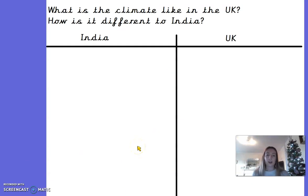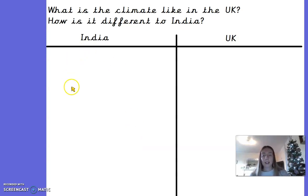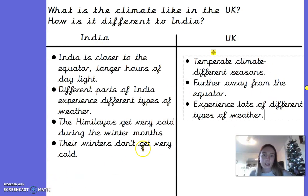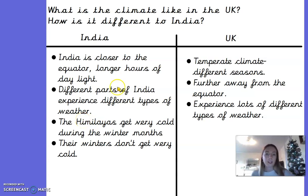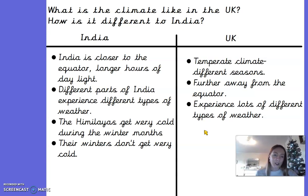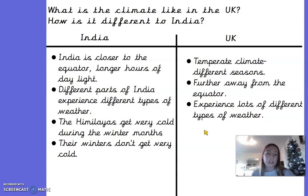Pause the video and write down as many differences as you can think of — what is the climate like in India and in the UK? India is closer to the equator so they have longer hours of daylight, whereas in the UK we're further away and have different seasons with dark winters and late mornings. Different parts of India experience different weather — the Himalayas get very cold in winter, but the rest of India doesn't. In the UK we have a much more temperate climate with lots of different seasons.